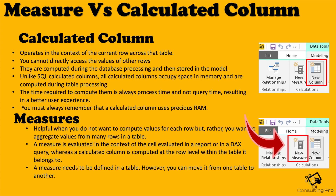Now let's talk about measures. Measures are helpful when you do not want to compute values over each row; rather, you want to compute values over a cell. They use aggregated values for many rows in a table. A measure is evaluated in the context of the cell, while a calculated column is evaluated in the context of the row. A measure needs to be defined in a table, but you can move it from one table to another, or even create a separate table for your measures as a best practice. In Power BI there are two types of measures: explicit and implicit — we will discuss those in another video.